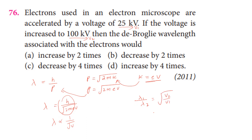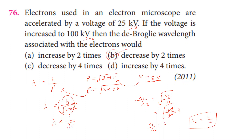The second potential is 100 kilovolt and the first is 25 kilovolt. The ratio 100 over 25 equals 4, and its square root is 2. Therefore lambda₁ divided by lambda₂ equals 2, meaning lambda₂ equals lambda₁ divided by 2. The final wavelength is half of the initial wavelength — it decreases by 2 times.